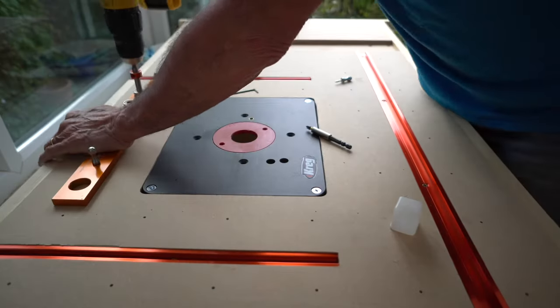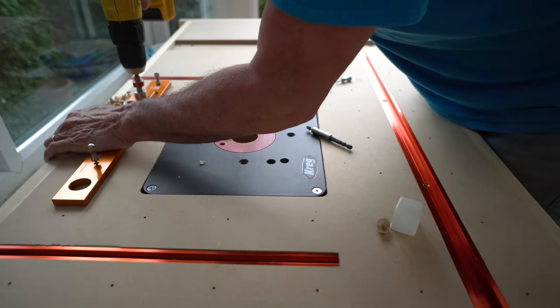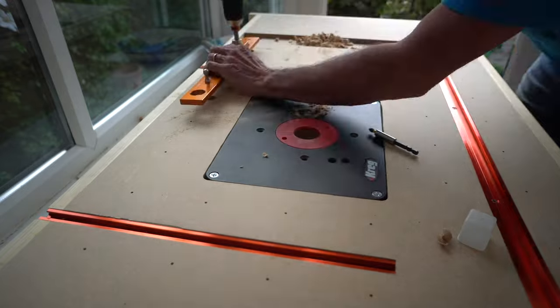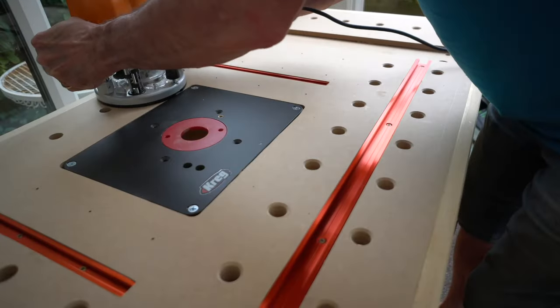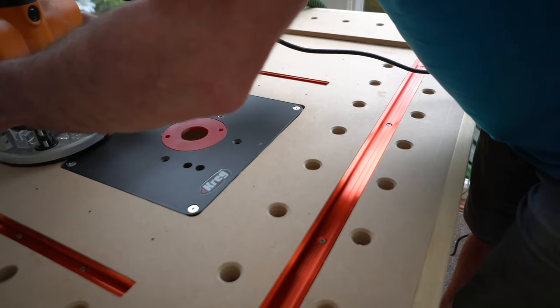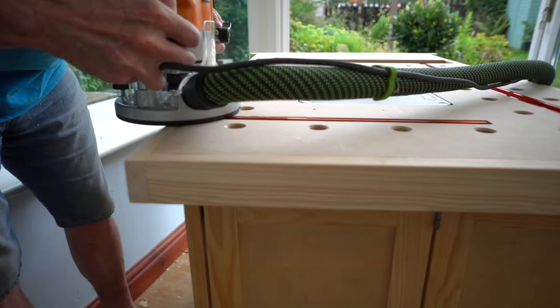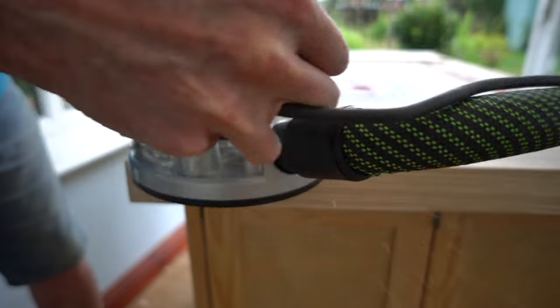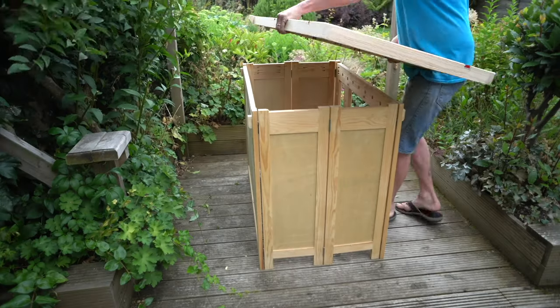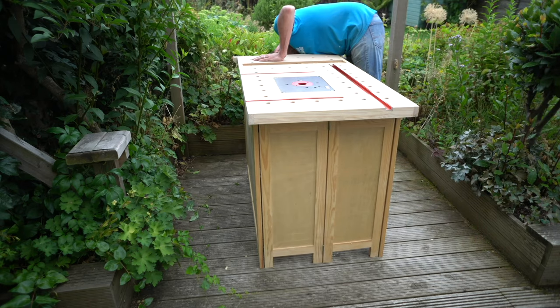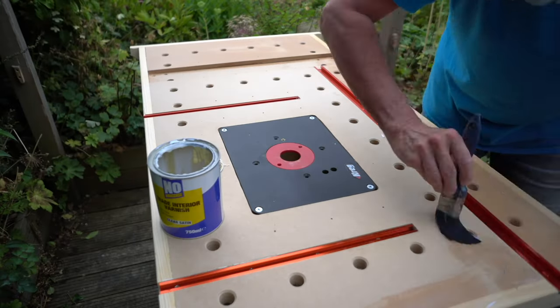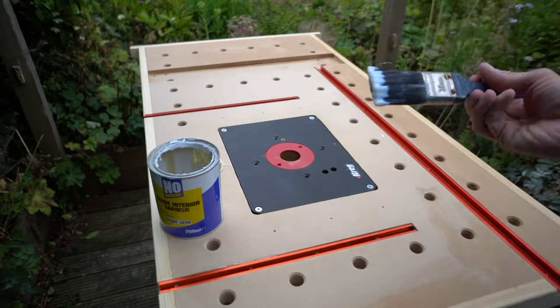Now it was time to turn some of the 3mm holes into the 20mm dog holes. To do this, I used my parf guide jig. I did not drill out all the holes because I wanted to keep some for reference for other items I wanted to fix. To the end of the bench, I ran a chamfer around the perimeter of the bench top. To protect the top, I applied a couple of coats of quick-drying varnish.